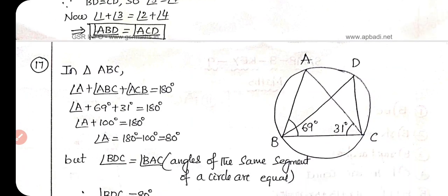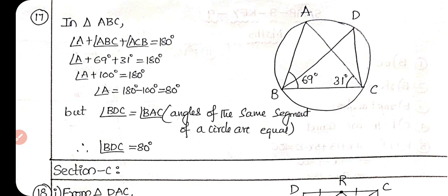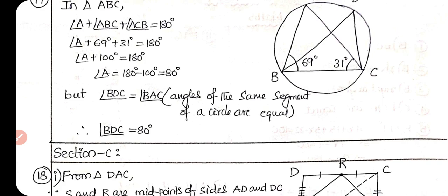Question 17: In triangle ABDC, angle A + angle BDC + angle ABD + angle ACB = 180 degrees (triangle property). Angle A + 69 + 31 = 180. Angle A + 100 = 180. Therefore angle A = 80 degrees.